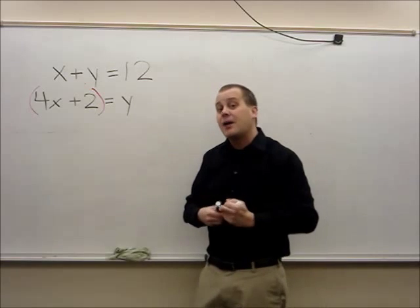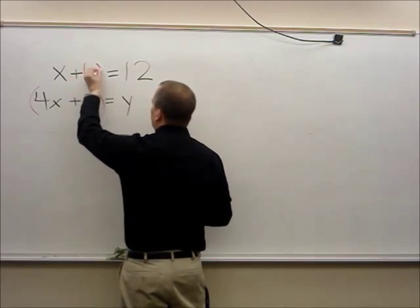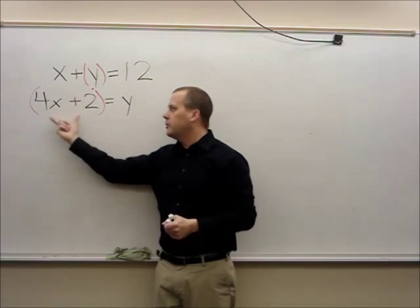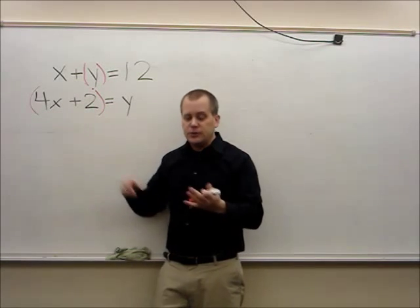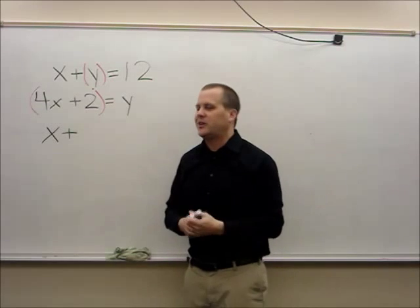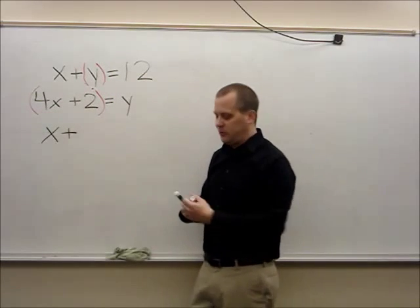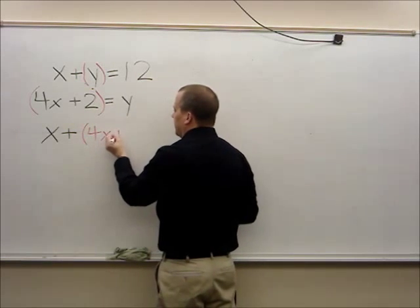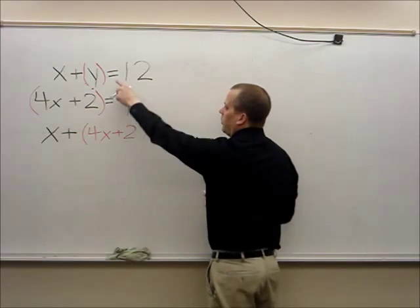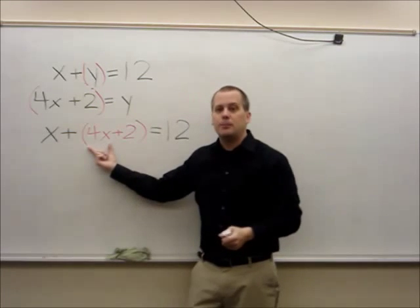I'm going to put parentheses around 4x plus 2 because that represents what y equals. Now on my first equation I'm going to put parentheses around y. Going back to my restaurant example, I'm going to take out the barbecue sauce and replace it with the ranch dressing. So when I rewrite this equation, x stays the same — just like those chicken fingers, they're still chicken fingers. Now I take out the y and replace it with 4x plus 2, written in red so you can see the switch. The equation ends with 12, so I write equals 12. This is my new equation.